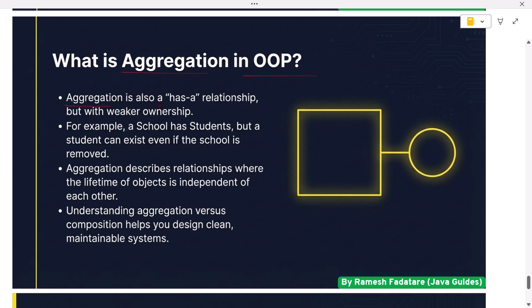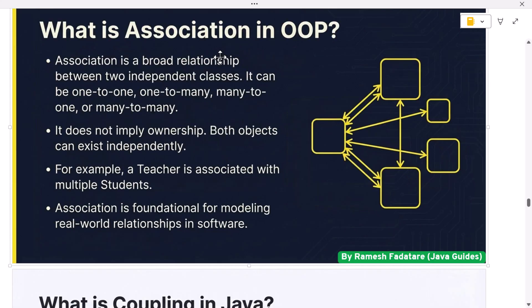What is aggregation in OOP? Aggregation is also a 'has-a' relationship but with weaker ownership. For example, a School has Students, but a Student can exist even if the School is removed. Aggregation describes relationships where the lifetime of objects is independent of each other. Understanding aggregation versus composition helps you design clean, maintainable systems.